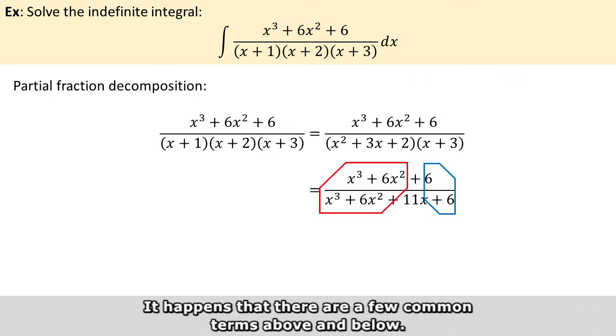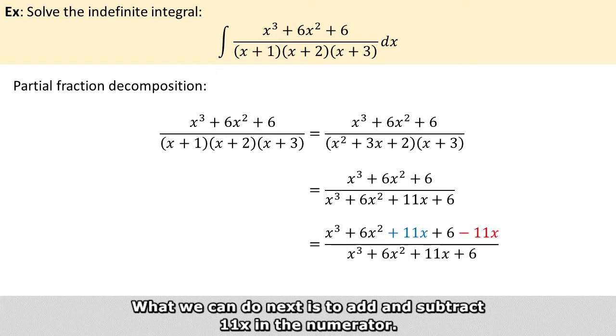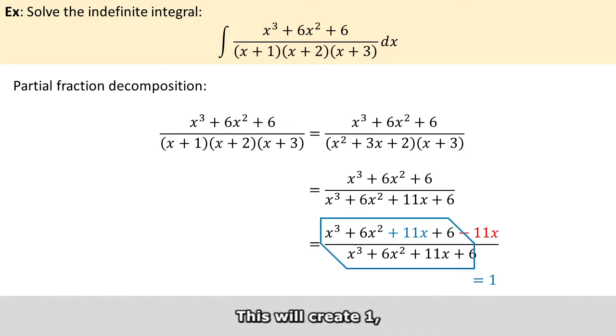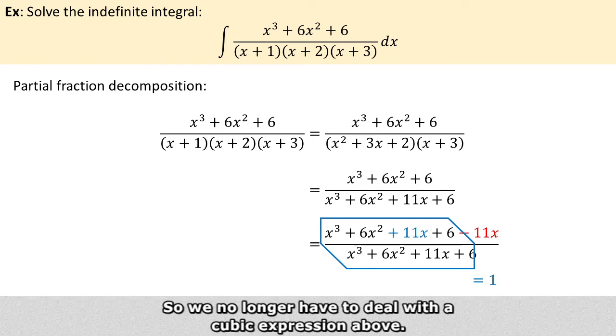It happens that there are a few common terms above and below. The only difference between the numerator and the denominator is 11x. What we can do next is to add and subtract 11x in the numerator. This will create 1, while reducing the number of terms in the numerator of the fraction left behind. So we no longer have to deal with a cubic expression above.